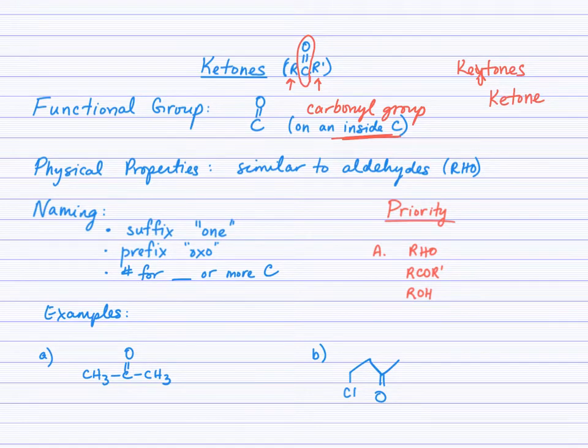In terms of naming we see the suffix O-N-E which is pronounced own, not one. If you have a carbonyl group that is not the highest in priority in the molecule then we name it as a prefix by O-X-O.